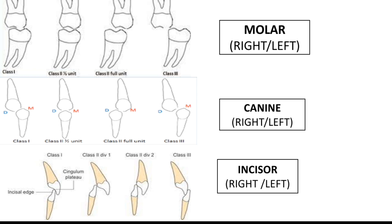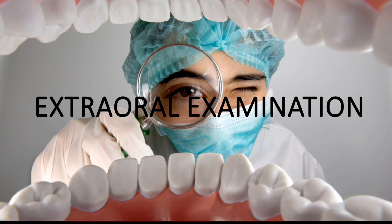The next very important assessment is molar classification. Knowing the molar classification allows us to easily identify the patient's condition. Class I is normal; Class II has two types — full cusp and half cusp. Class III is also noted. For incisors there is Division I and Division II. All classes must be recorded.